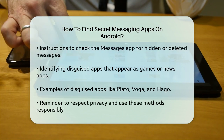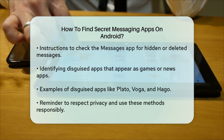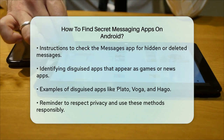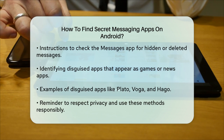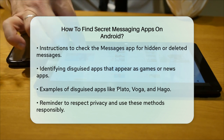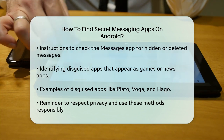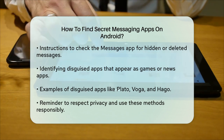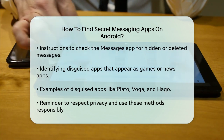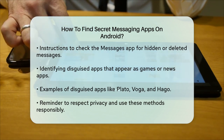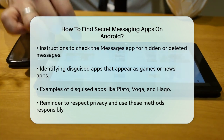Identifying disguised apps: some secret messaging apps are disguised to look like other types of apps, such as games or news apps. For example, apps like Play-Doh, Voga, and Hago look like gaming apps but have secret messaging features. To identify these, check the app library on the device and look for apps that seem out of place or have unusual permissions.